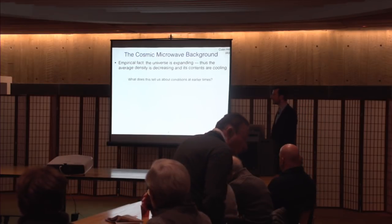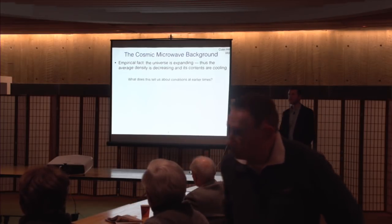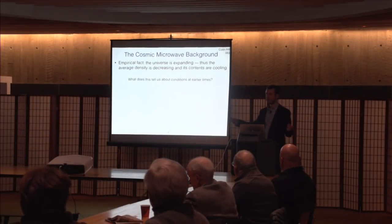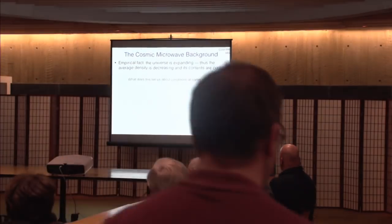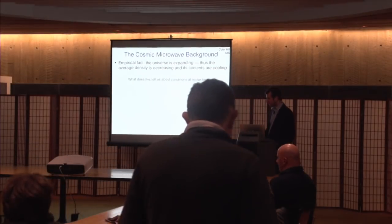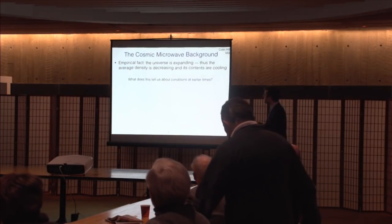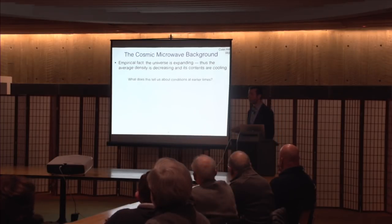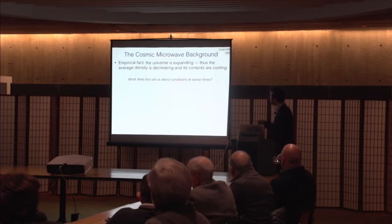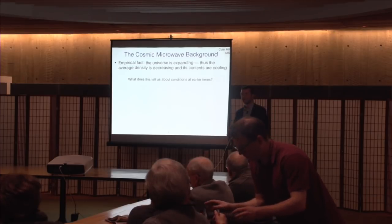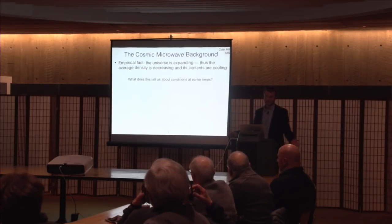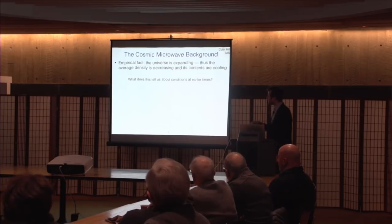Let's start with an empirical fact that hopefully everyone is aware of: the universe is expanding. The distance between pairs of galaxies is increasing with time — it's not expanding into something, but the distance between widely separated galaxies is increasing. This implies that the average density of matter is decreasing as volume grows, and the typical temperature of the contents is also decreasing, just as gas in a box cools when the box expands.